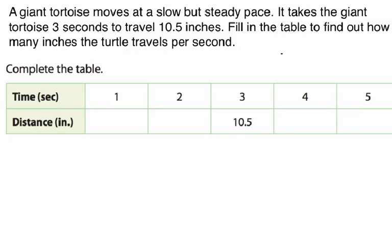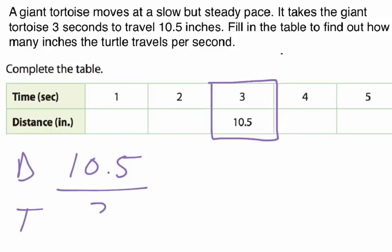Okay, so let's use the information we have. Most of this table is not filled in, but right here at the time of three seconds, this turtle has gone 10.5 inches, and that's the distance. So I'm going to create a rate here, and then we can find the unit rate. We'll put our distance on top, 10.5 inches, and time on the bottom, three seconds.